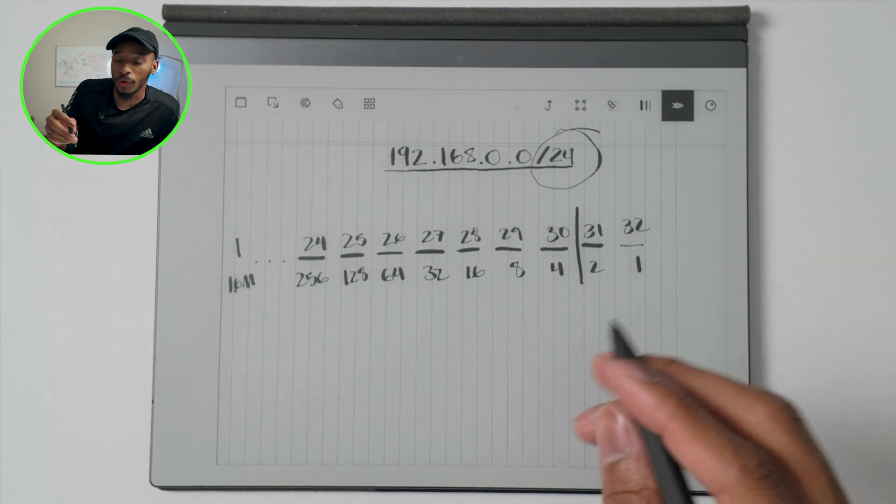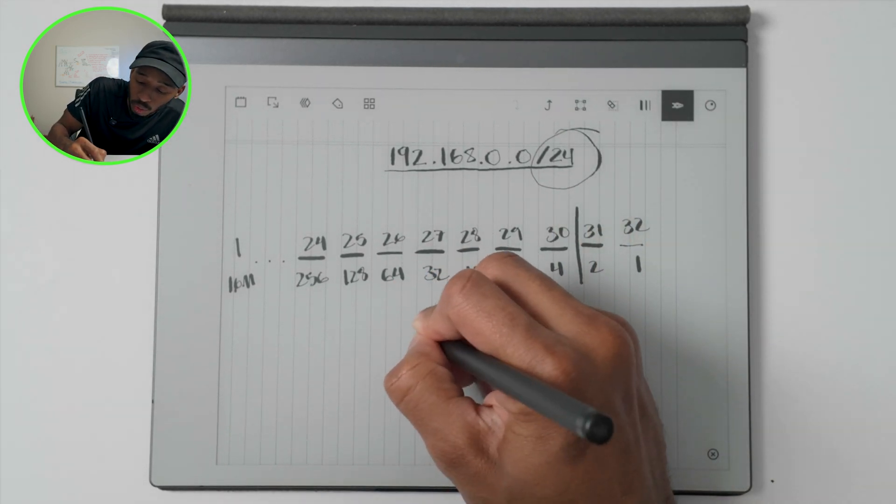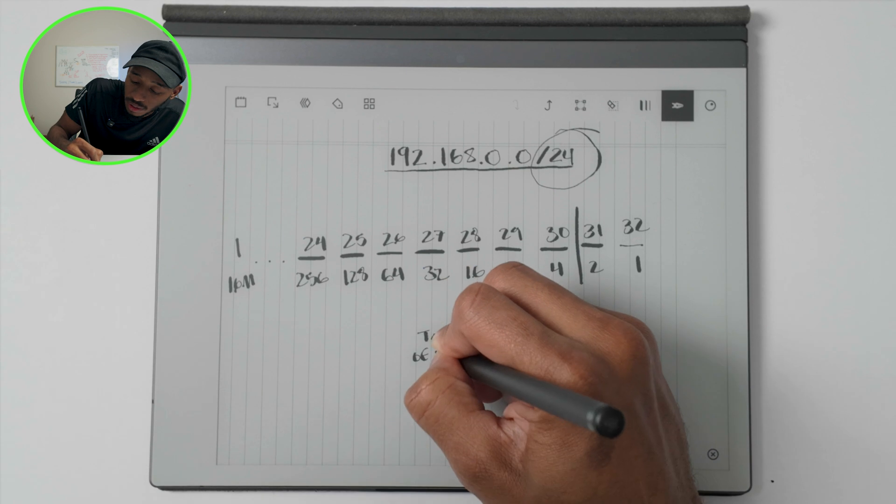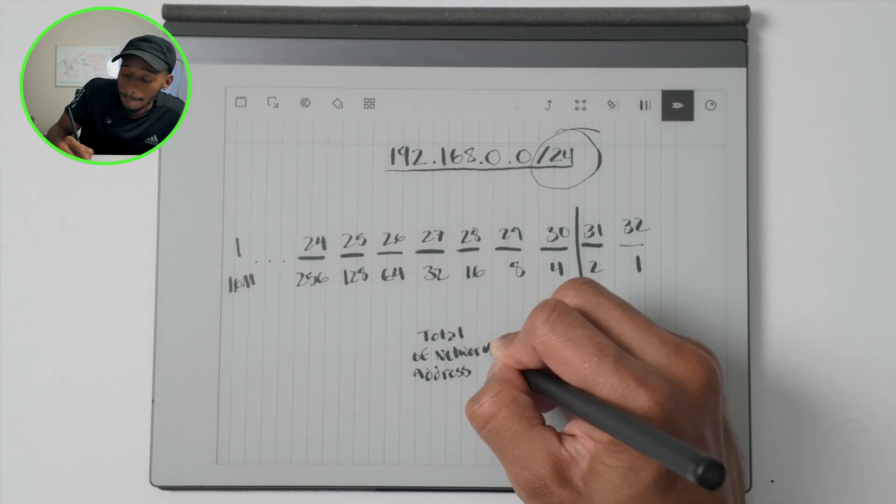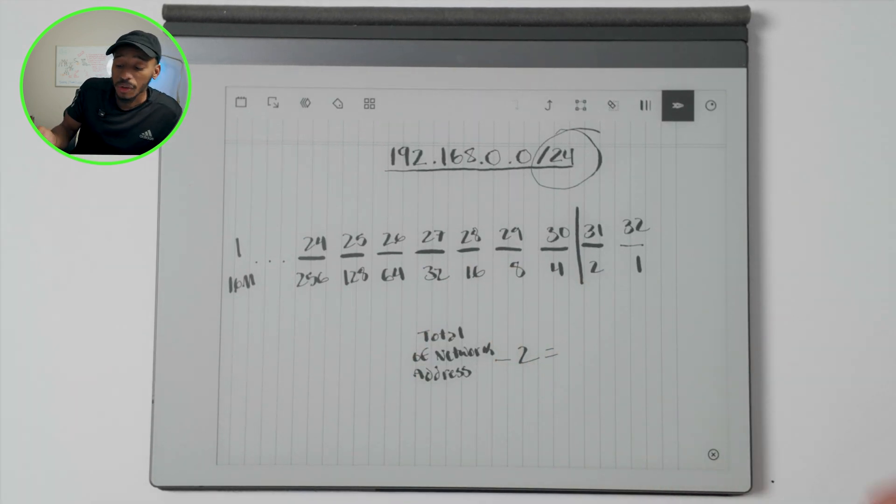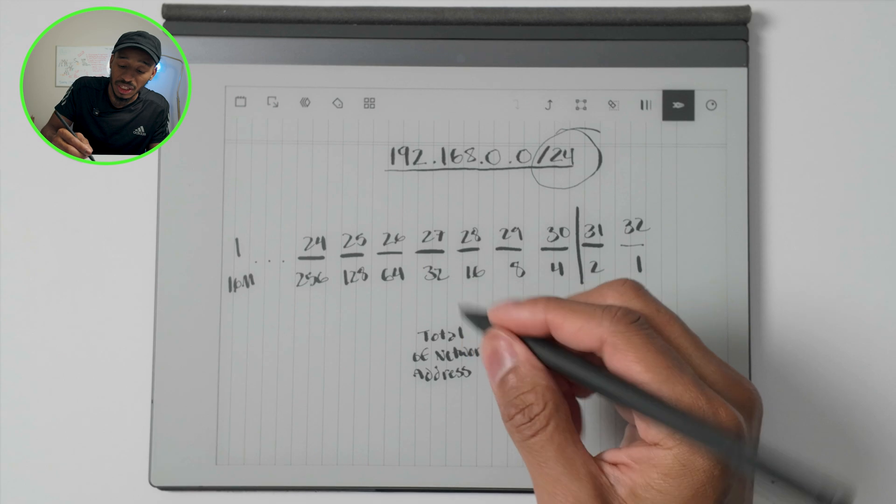How you calculate the total number of host bits is just say total number of network addresses minus two. That's all you have to do. This is your formula.